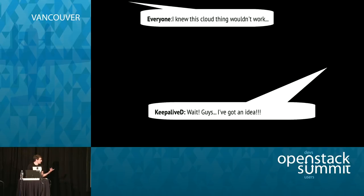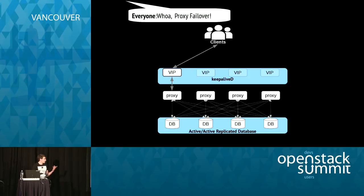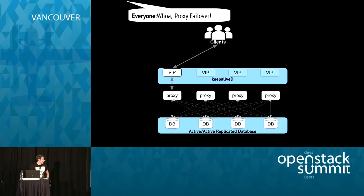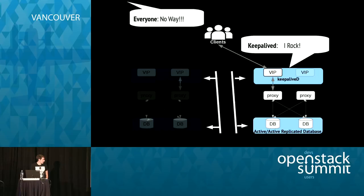To fix this initially, we used KeepaliveD. With KeepaliveD, we have the ability to assign a virtual IP address to our HAProxy instances. We have redundant HAProxy instances, so if one dies, the virtual IP moves to another active instance. With HAProxy instances and database instances failing, clients have no clue — everything just keeps working. This is kind of awesome, this is what we were looking for. Kind of.